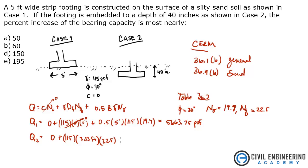Plus 0.5 times the 5 feet, which is b, times 115, your density, times N gamma, which is 19.7.